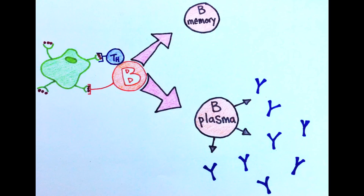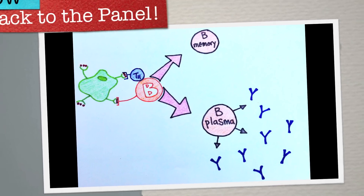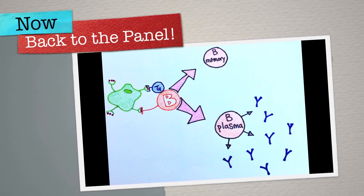The B cells then divide into B memory cells that remain in the body ready for the next exposure, and B plasma cells, which make antibodies. In our case, these antibodies would be anti-B. These processes continue simultaneously until all the foreign RBCs are destroyed.